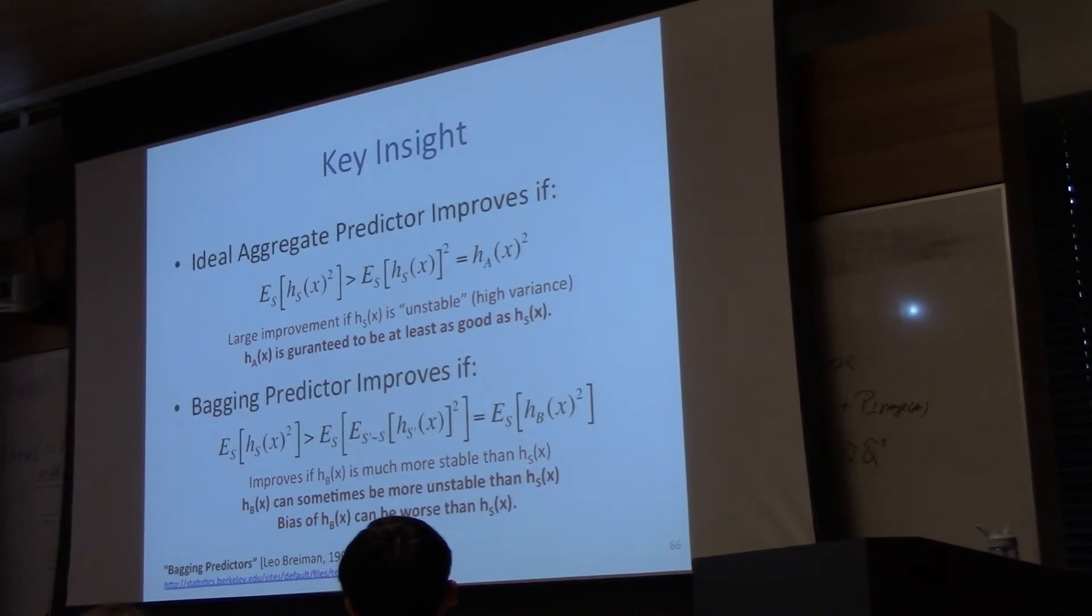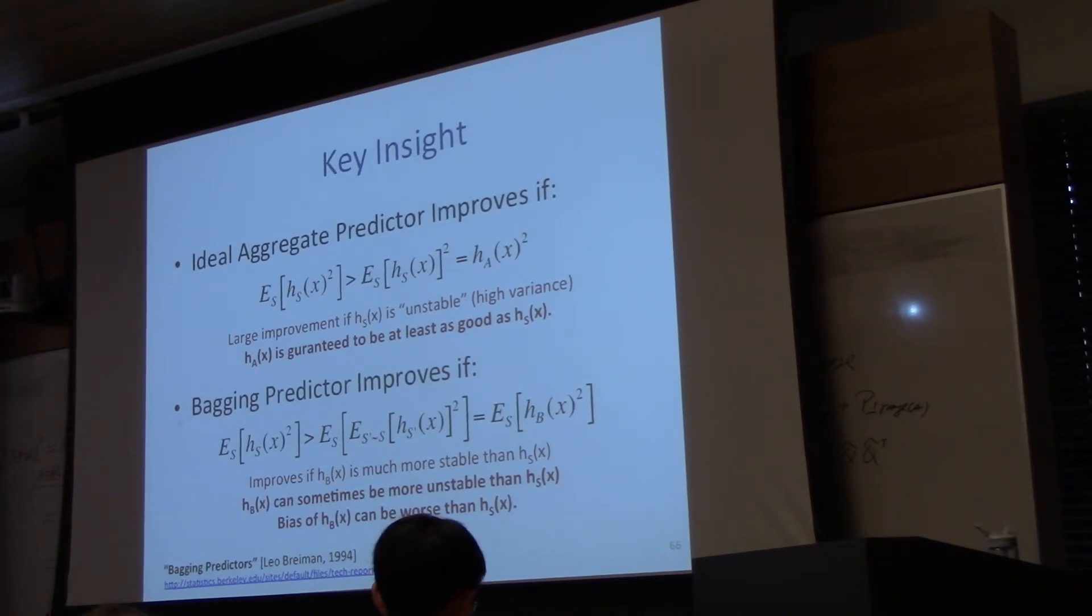If we instead think about the bagging predictor, what is the bagging predictor? The bagging predictor is this, which is not exactly this, and this inequality doesn't always hold in practice. It depends on the data set, but usually it holds in practice if you have a large enough data set, where bagging starts to approximate actual resampling. And when this inequality does hold, then bagging works. So sometimes, occasionally, bagging hurts, but usually bagging either doesn't help much or helps a lot, because usually we work with data sets that are sufficiently large.